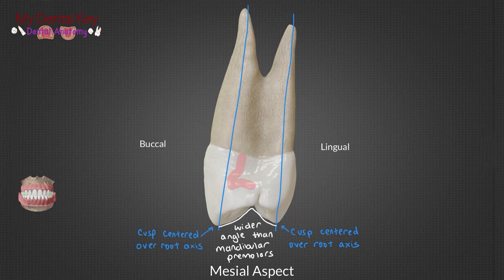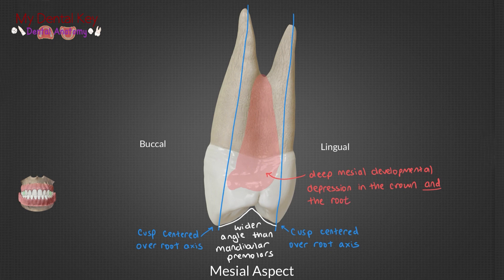Most importantly, there is a deep mesial developmental depression between the contact area and the CEJ. This is the only premolar that has this trait. This depression extends onto the mesial aspect of the root to the bifurcation. If you can remember this, you can tell this premolar apart from other premolars, and you can tell the mesial and distal side apart as well.